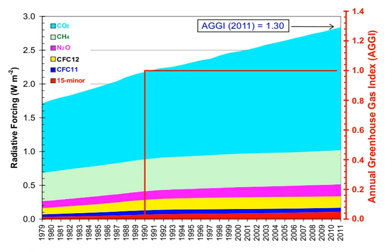Water vapor accounts for the largest percentage of the greenhouse effect, between 36% and 66% for clear sky conditions and between 66% and 85% when including clouds. Water vapor concentrations fluctuate regionally, but human activity does not directly affect water vapor concentrations except at local scales, such as near irrigated fields.